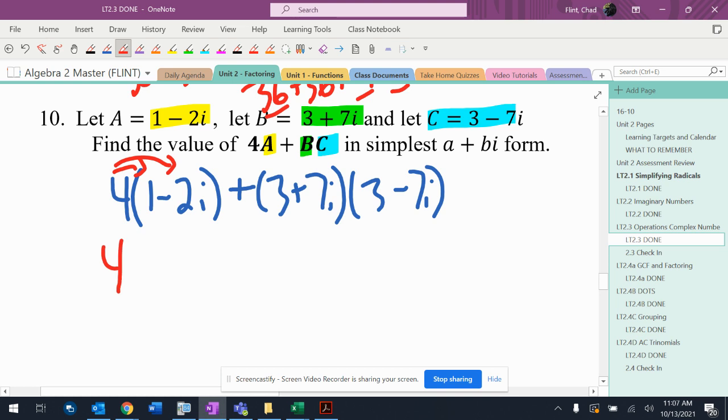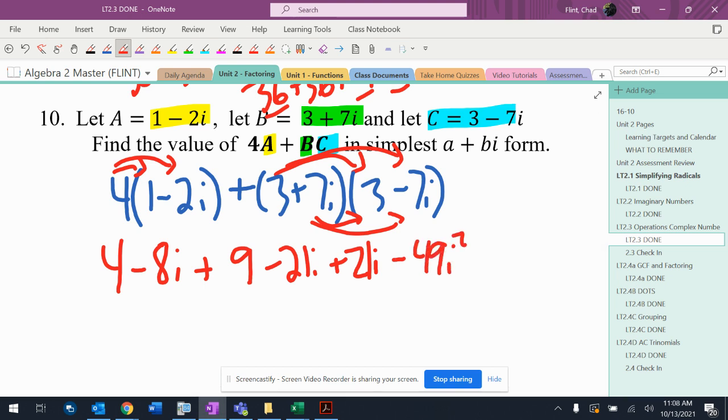I get 4 minus 8i, plus... and then all this junk. 3 times 3 is 9, 3 times -7i is -21i, plus 7i times 3 is 21i, and then -49i².